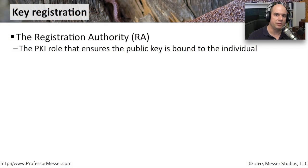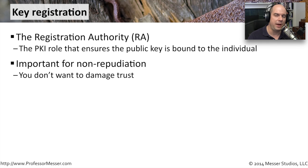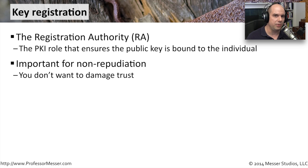The role in your public key infrastructure that ensures you have the right people associated with the right certificates is called the registration authority. This registration process ensures that you have exactly the right people lined up with exactly the right certificate. You don't want someone receiving a message from James, signed by James, only to find out later it was somebody who had James's certificate. This process is in place to ensure you don't have that type of fraud or any mix-up with those certificates.